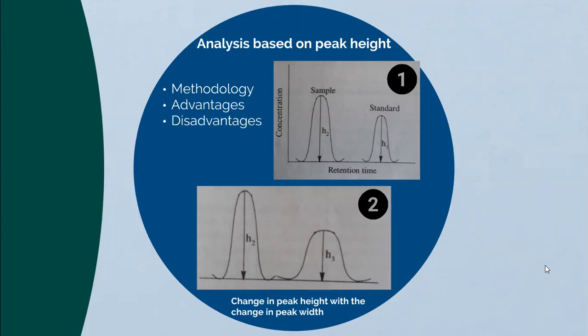Advantages: the measurement of peak height gives accurate results, provided the width during the period required to obtain the chromatogram for a sample and a standard, the column temperature, the flow rate of the mobile phase, and the rate of sample injection are controlled properly. Peak heights are measured more easily and accurately if the peaks are narrow. Disadvantage: if column temperature, flow rate, and rate of sample injection are not controlled properly, variation in peak width is observed. As shown in figure 2, the change in peak width results in a change in peak height, leading to inaccuracy in measurement.